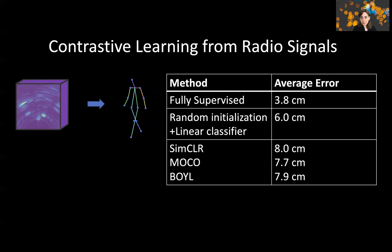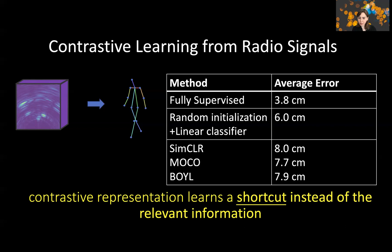What is happening is a problem called the shortcut. Contrastive learning is learning something — in fact, as you are training these networks, we can see that the contrastive loss is decreasing properly. However, what contrastive learning is learning is shortcut information. It's learning information that is irrelevant to the task of interest and discarding the information that is relevant. This discarding causes the error to increase as opposed to decrease.